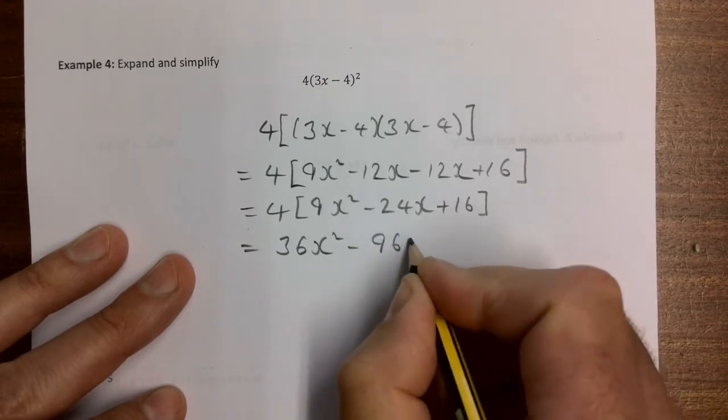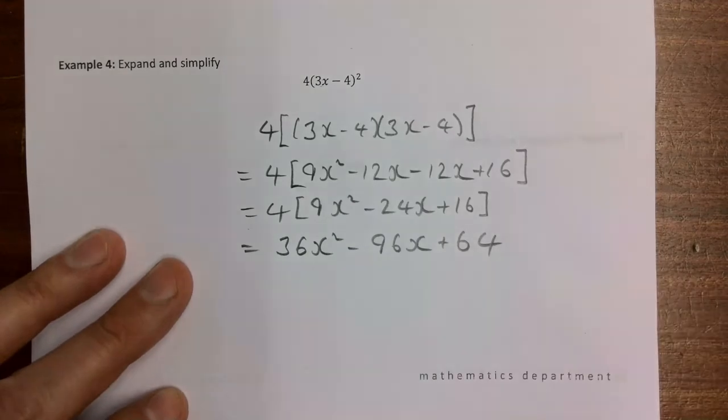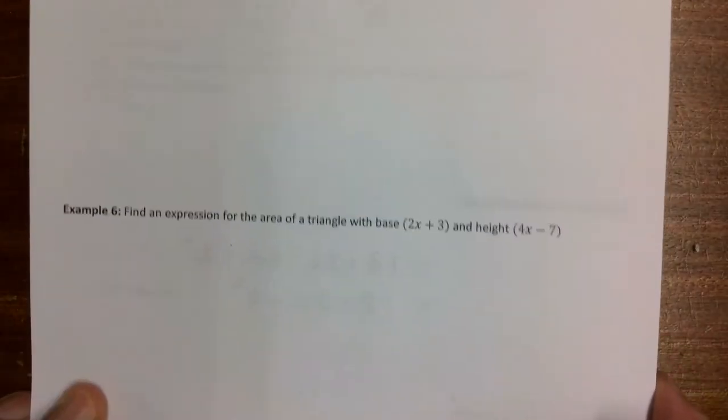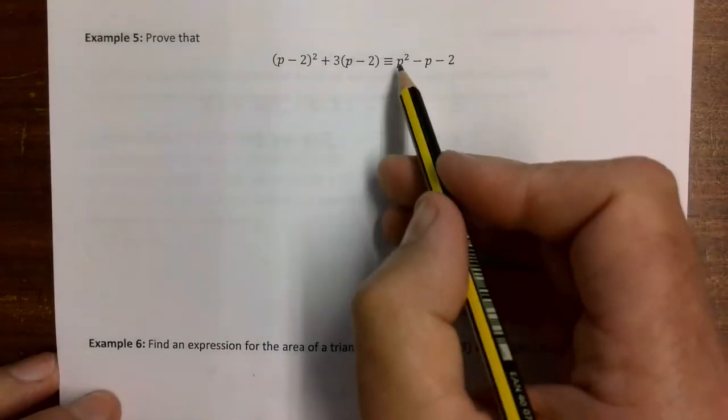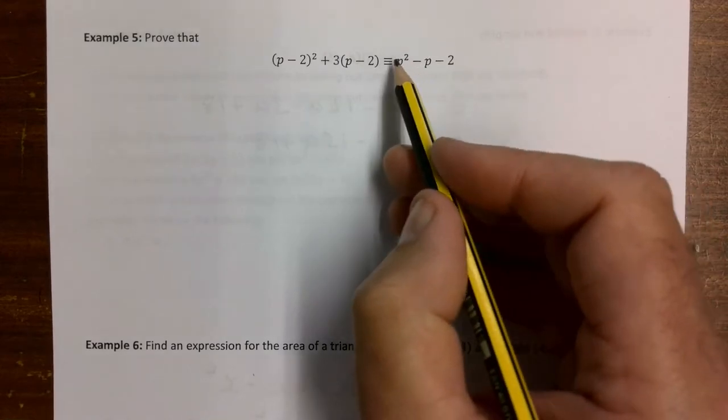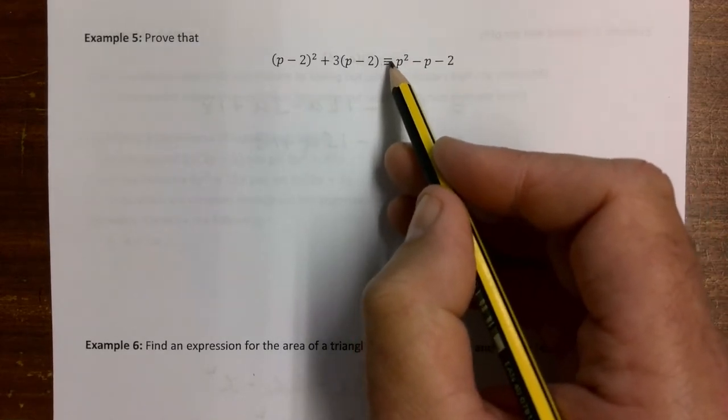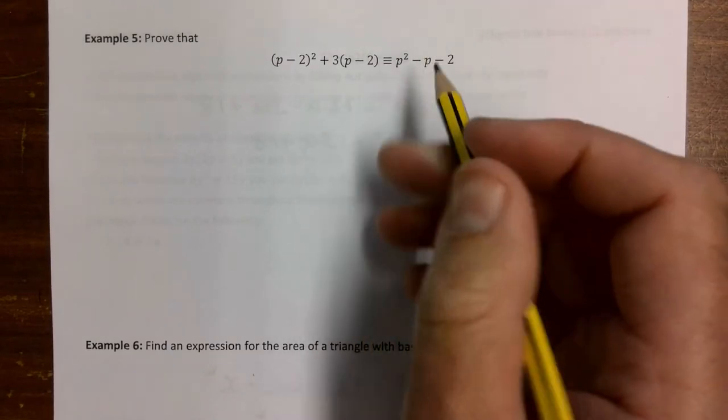Example 5: Prove that (p minus 2) squared plus 3(p minus 2) is always equal to p squared minus p minus 2. It's hard to see what's going on here. This is almost like an equal sign - it's just showing that this is equivalent, showing that these are the same as each other.